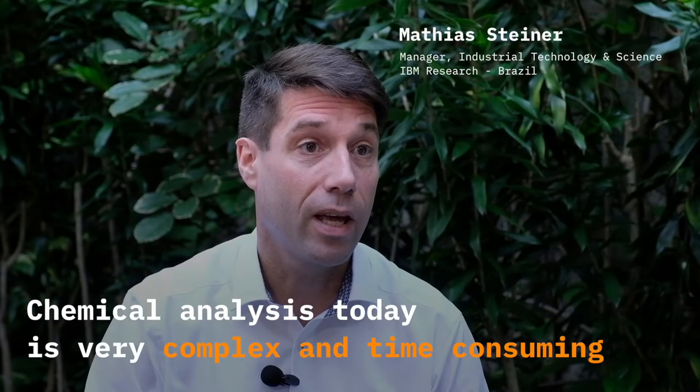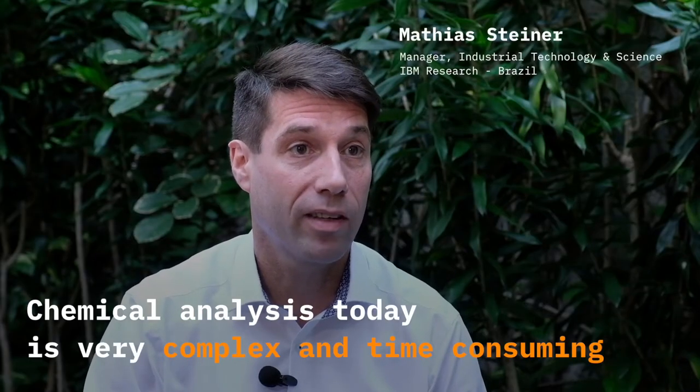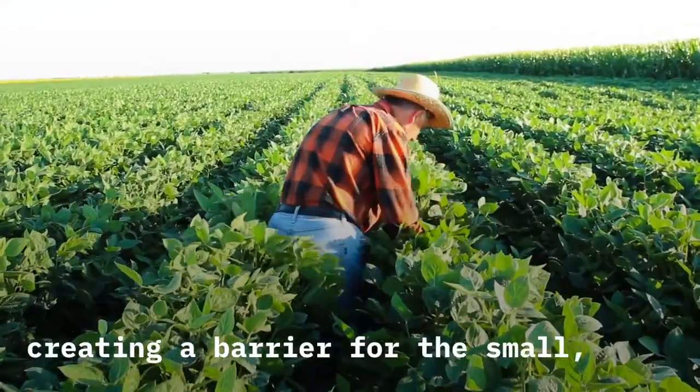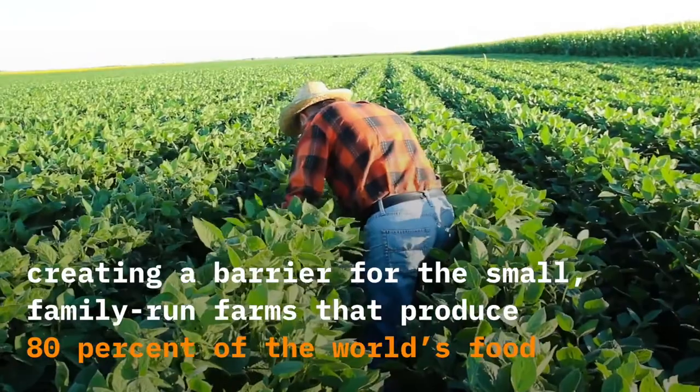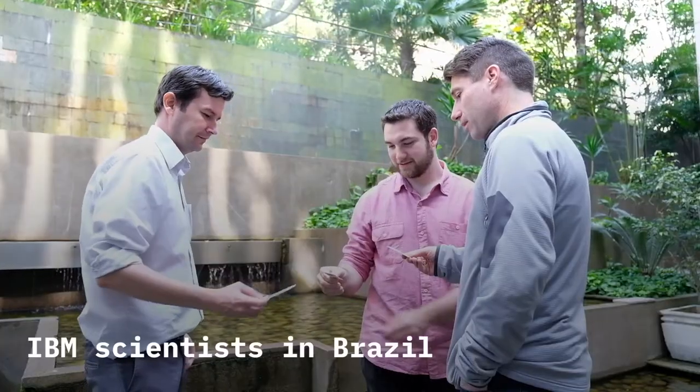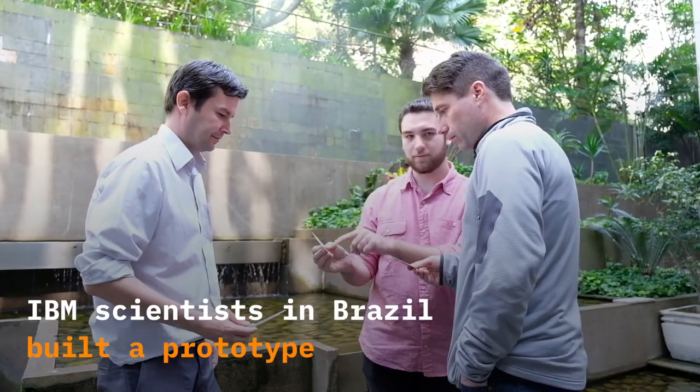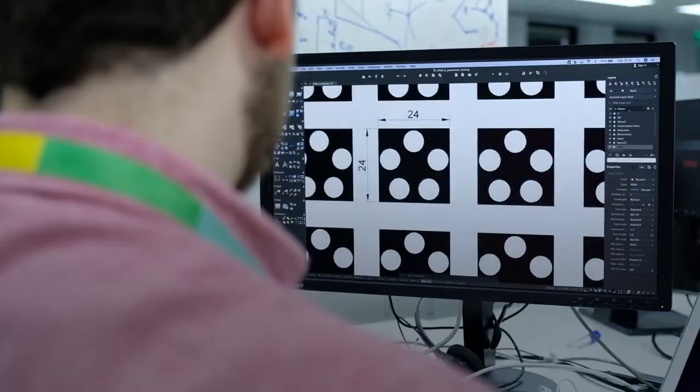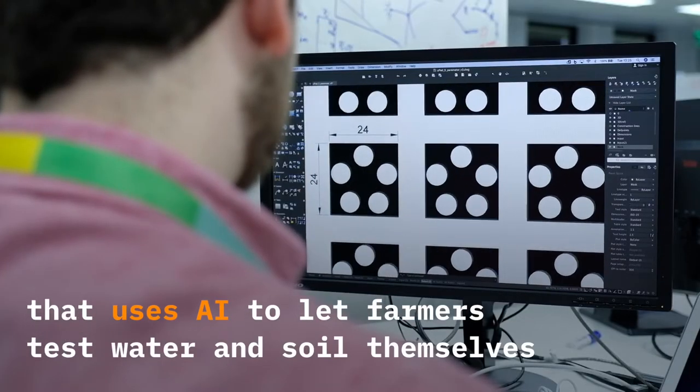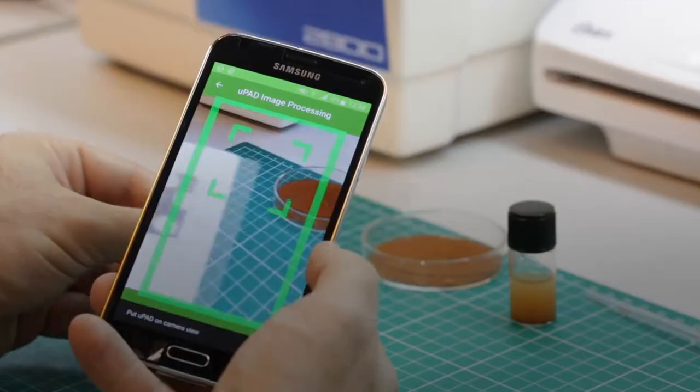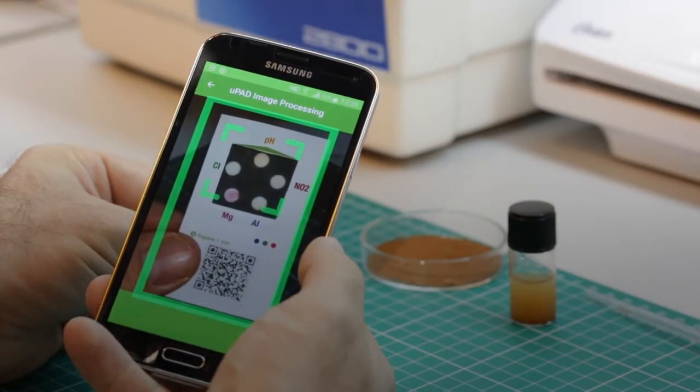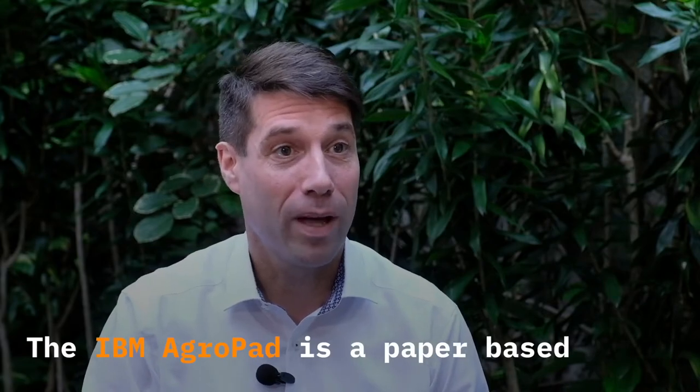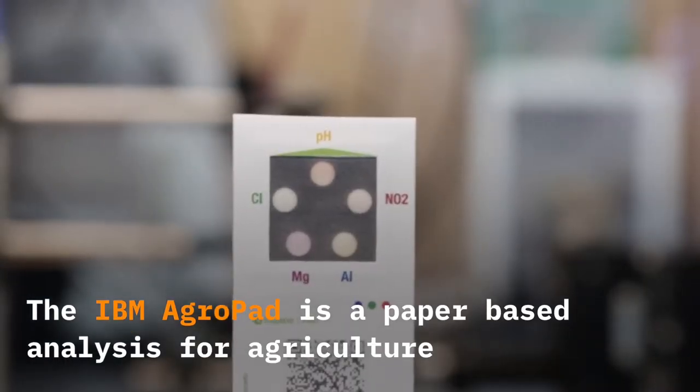Chemical analysis today is very complex and time-consuming. The IBM AgroPad is a paper-based analysis for agriculture.